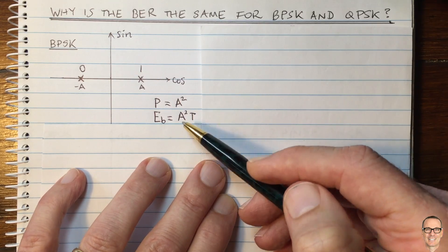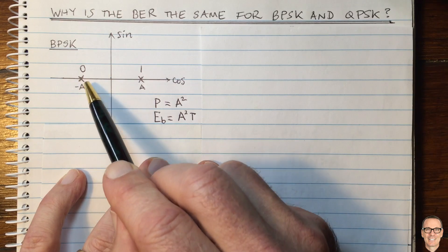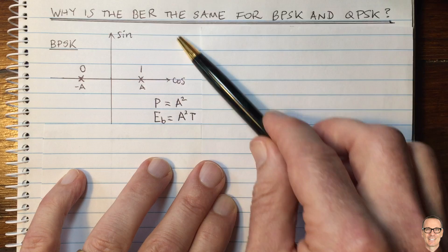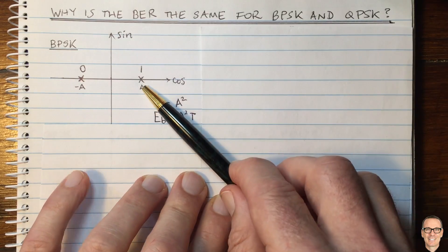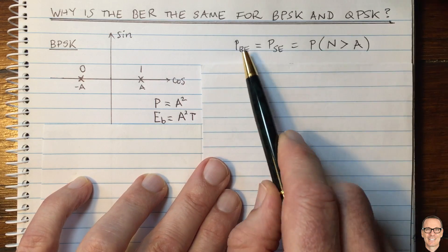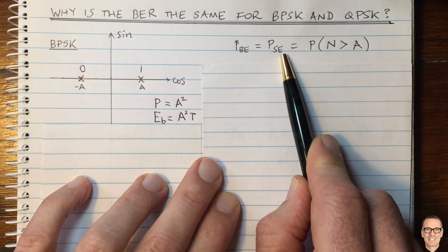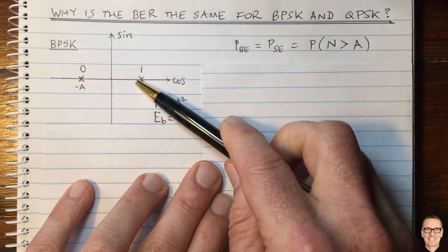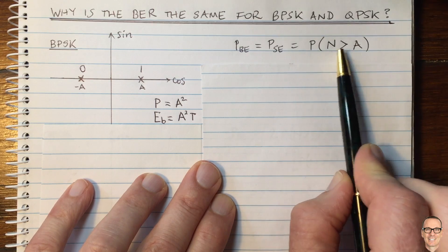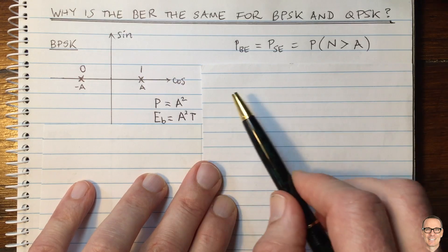Now let's think about the errors. When are we going to be making errors? Let's think about the case when you're sending a digital 0. If the noise was bigger than a, then your received value would be on the right-hand side of this plane, and then you would make an error. The probability of making a bit error in this case is the same as the probability of making a symbol error, because these are the symbols we are sending to represent the bits. That equals the probability that the noise is bigger than a. And since it's symmetric, the same holds if you're sending a digital 1.